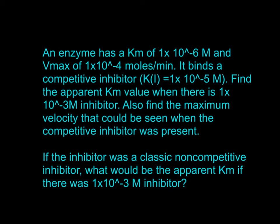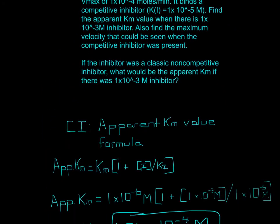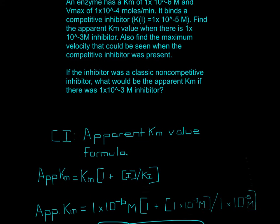This question has two parts. An enzyme has a Km of 1×10⁻⁶ molar and a given Vmax. It binds a competitive inhibitor with a given inhibitor constant (Ki). Find the apparent Km value when there's a given concentration of inhibitor, and also find the maximum velocity when the competitive inhibitor is present. Let's start with the apparent Km value.